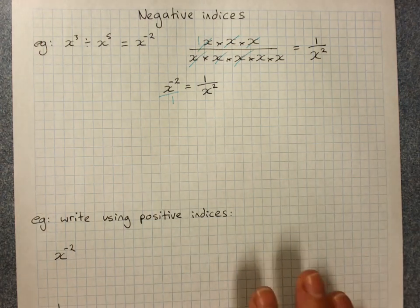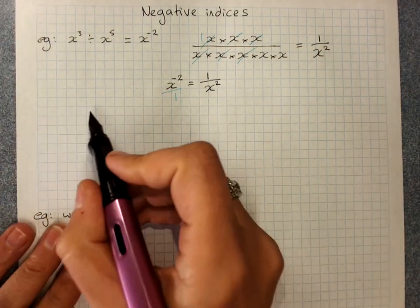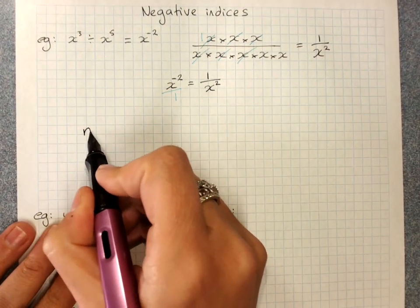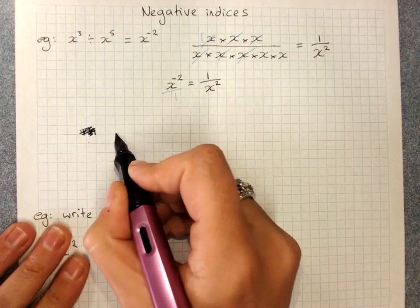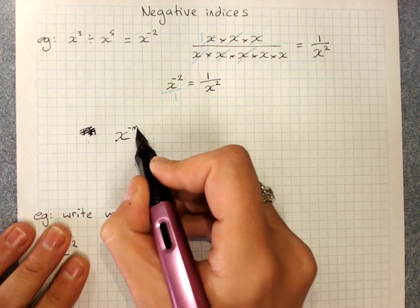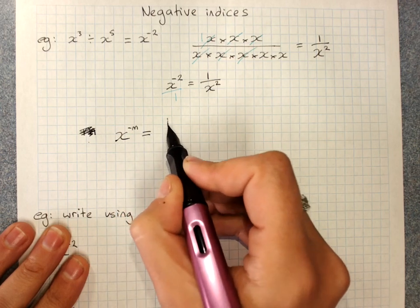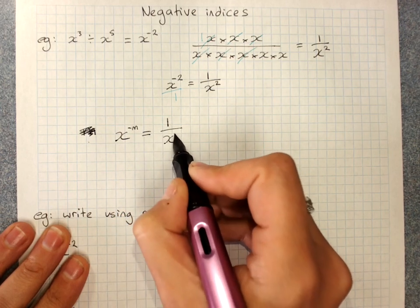Now how we write that algebraically for our rules? x to the negative m is the same as 1 over x to the positive m.